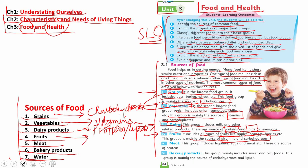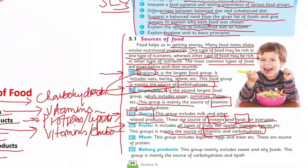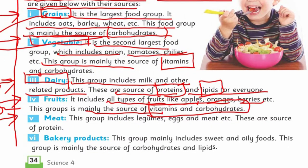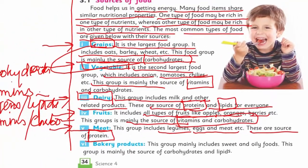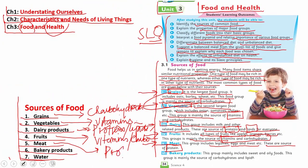So fruits give us vitamins plus carbohydrates. The fifth group is meat. This group includes legumes, eggs, and meat. These are sources of protein, which is a vitally important nutrient for our bodies.